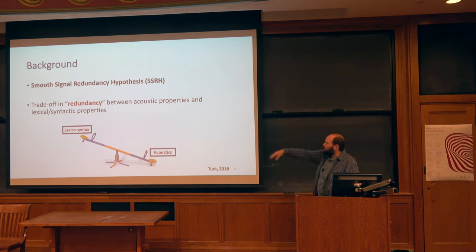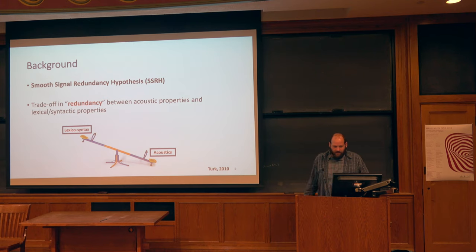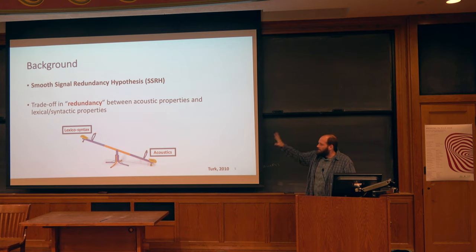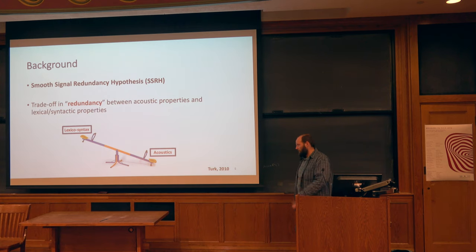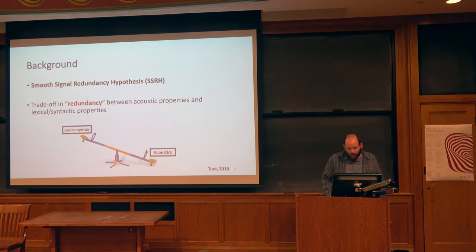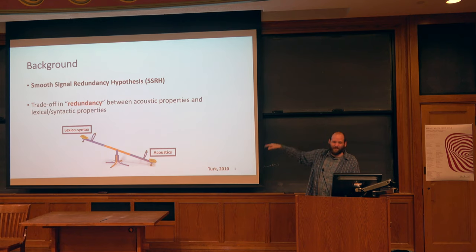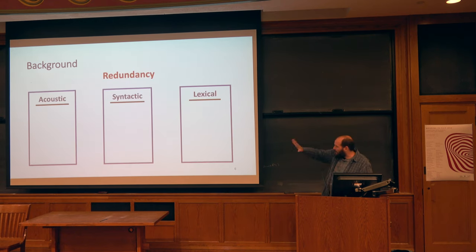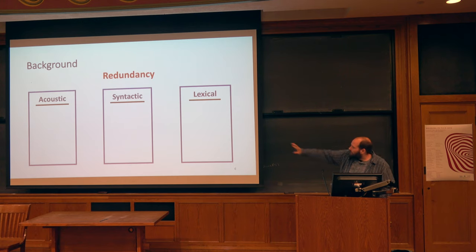What this hypothesis says is that there's some sort of trade-off in what she terms redundancy. We'll return to this term in a moment and how to interpret it. But basically, redundant acoustic properties are balanced against redundant lexical or syntactic properties, such that if you have something that is lexically or syntactically redundant, then you get a heavier acoustic signature in terms of prominence. So you can think of redundancy in the acoustic sense here as prominence. On the other side, lexical or syntactic redundancy — it's a lot more difficult to figure out exactly what redundancy means.